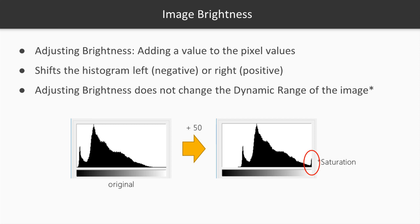On the left we can see the histogram of our original panda image. Increasing the brightness by 50 adds 50 to each pixel value, so as expected, the histogram is shifted by 50 gray values to the right. Note that the width of the histogram distribution does not change when we adjust the brightness, because the histogram is just shifted left or right. This width is what is known as the dynamic range of the image.